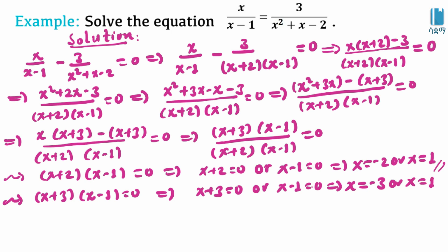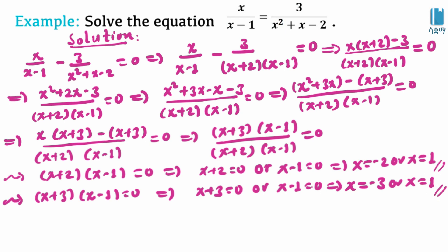We check: x equals negative 3 is a valid solution. However, x equals 1 makes the denominator zero — it is an excluded value — so x equals 1 is rejected. From the two candidate solutions, only x equals negative 3 is accepted, giving a solution set of negative 3.